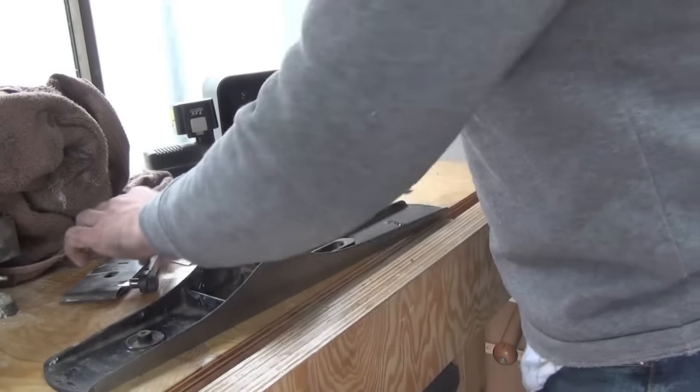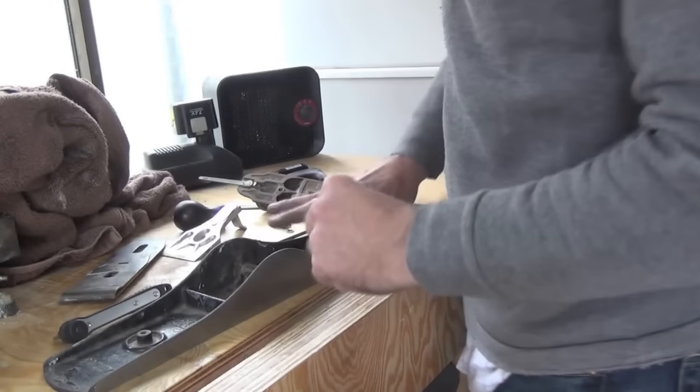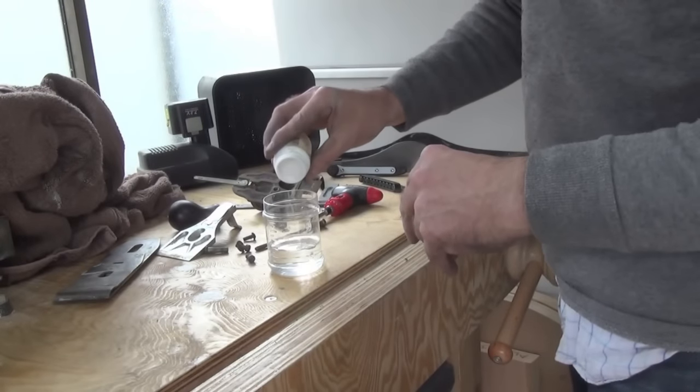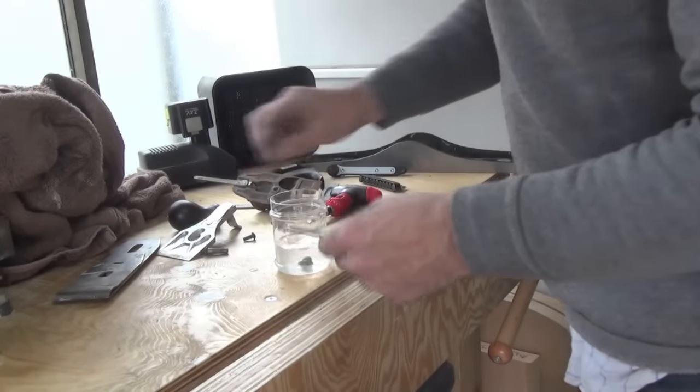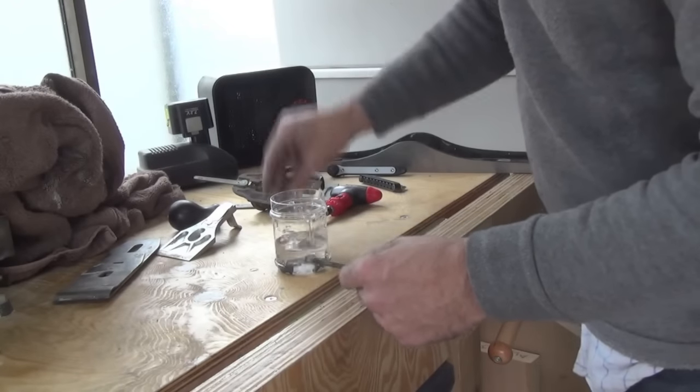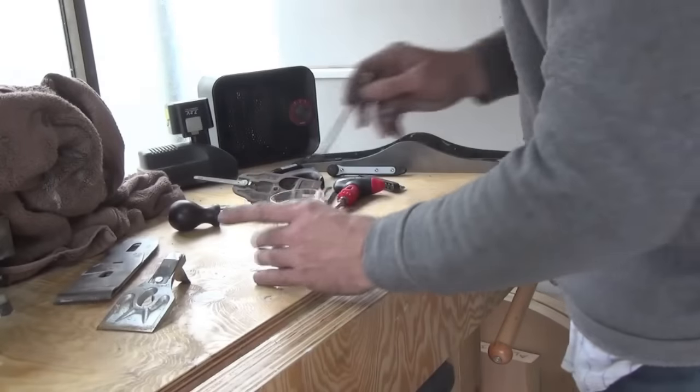So what I'm going to do is make a bath with citric acid to clean the rust off those. This is some citric acid, and if the parts go in here overnight, the rust will basically go away.